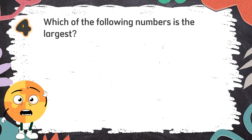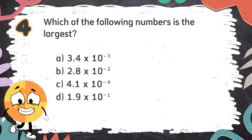Number 4: Which of the following numbers is the largest? The choices are: A. 3.4 times 10 to the power of negative 3, B. 2.8 times 10 to the power of negative 2, C. 4.1 times 10 to the power of negative 4, D. 1.9 times 10 to the power of negative 1.